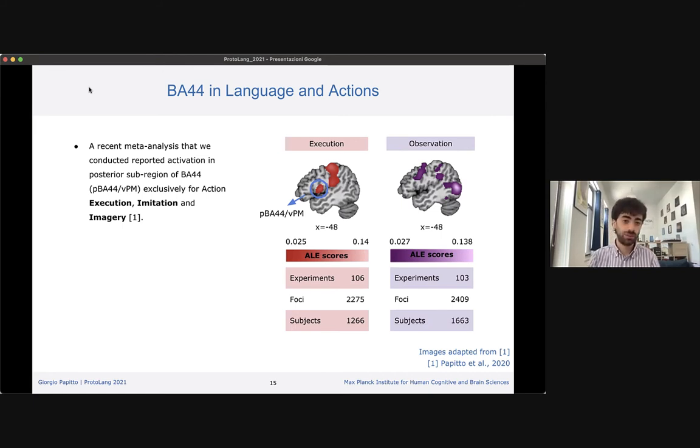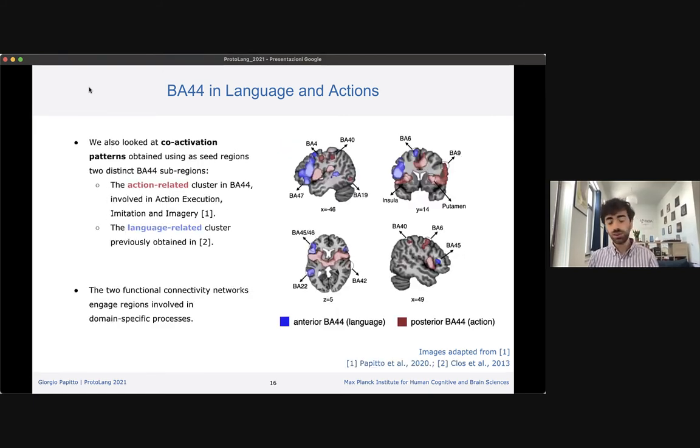This leads to the conclusion that BA44 contributes to all action processes, but only to some of them. Also, the cluster observed in action execution, imitation, and imagery is distinct from the BA44 cluster usually associated with language tasks. The action cluster tends to be posteriorly located and goes towards the premotor cortex, while the language cluster is anteriorly located, extending towards BA45.